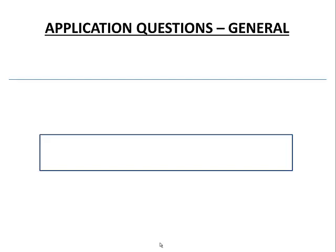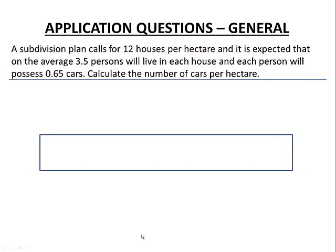Here is our computations and unit conversions lesson dealing with application questions in a more general format. We have a subdivision plan calling for 12 houses per hectare. On average, 3.5 persons will live in each house, and each person will possess 0.65 cars. We want to calculate the number of cars per hectare.